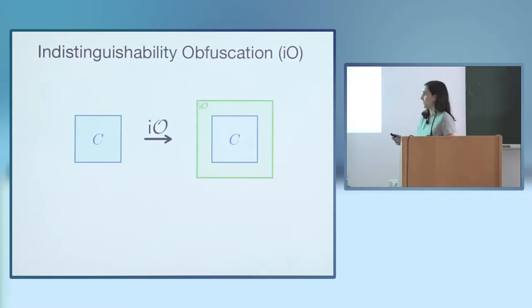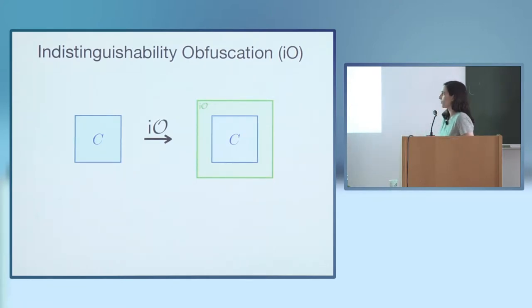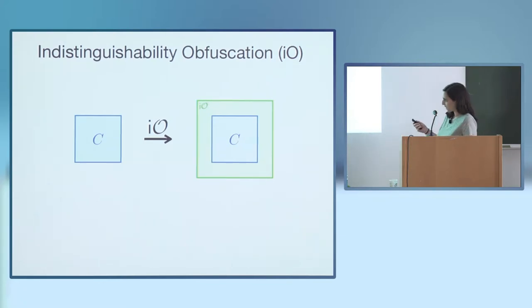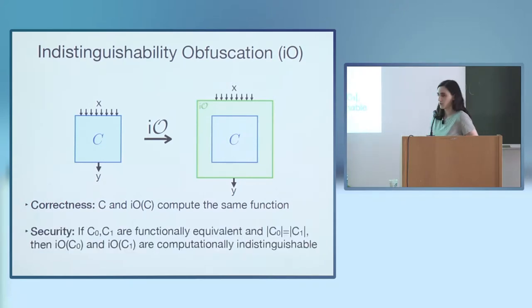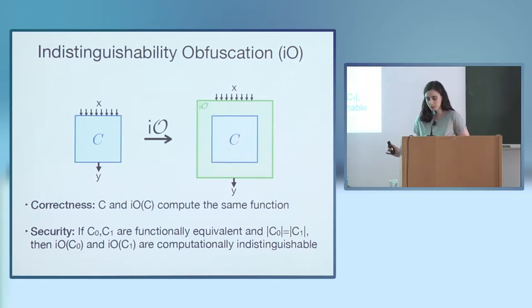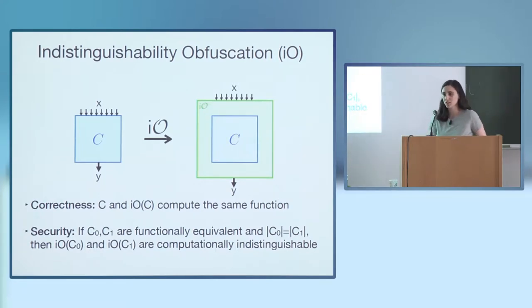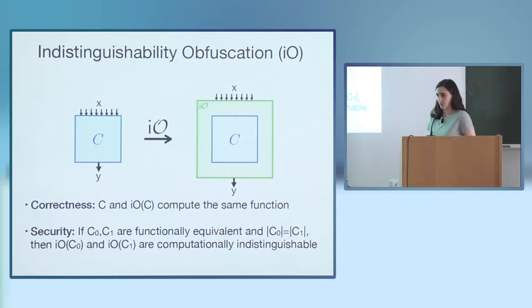The predominant notion, which might exist, is indistinguishability obfuscation, or IO. Slightly more formally, I'll be talking about IO for circuits in this talk. An obfuscator IO takes a circuit and produces an obfuscated circuit in such a way that they compute the same function. The security requirement is that if you have two circuits that are functionally equivalent and are the same size, then their obfuscation should be computationally indistinguishable.